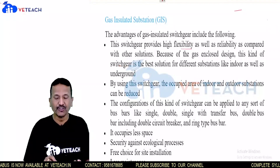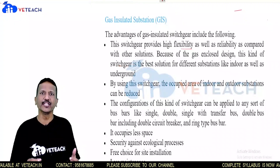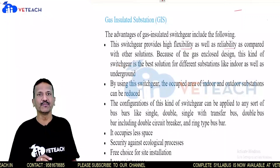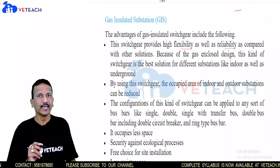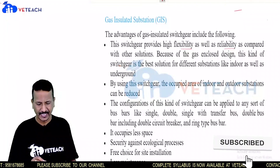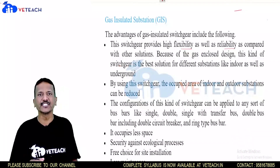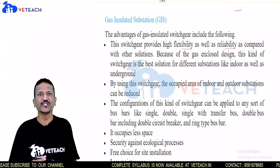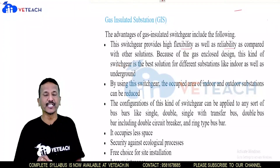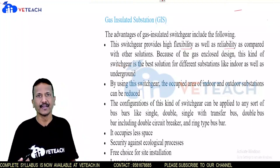In GIS, the switchgear provides high flexibility — we can control or use it easily. It also provides good reliability, meaning the performance can be identified very easily. It uses a gas enclosure design with SF6 as the insulating medium, making this kind of switchgear the best solution for different substation types.